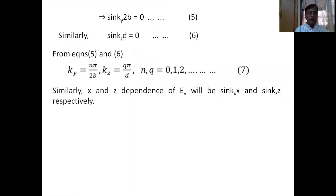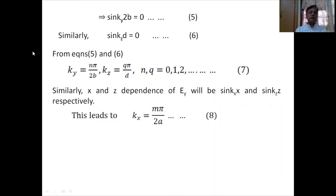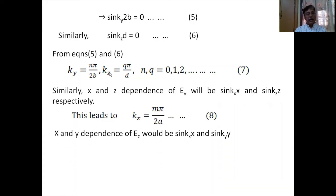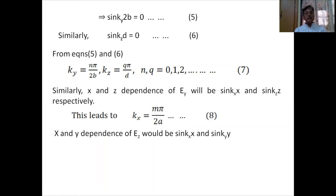Similarly, the x and z dependence of Ey are sin(kx·x) and sin(kz·z), giving kx = Mπ/2A. The x and y dependence of Ez are sin(kx·x) and sin(ky·y). Since the x-dependences of Ey and Ez are both sine functions, the terms ∂Ey/∂y and ∂Ez/∂z vanish at x=0 and x=2A. From the divergence condition ∇·E=0, ∂Ex/∂x also vanishes at these planes, so the x-dependence of Ex must be a cosine function.